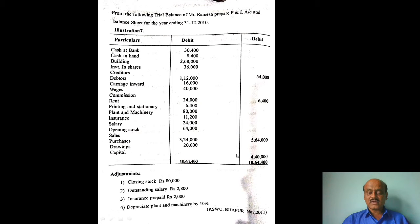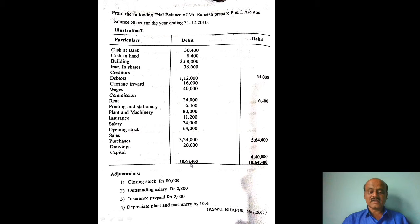Capital: Rs. 4,40,000. Drawings: Rs. 20,000. Purchases: Rs. 3,24,000. Sales: Rs. 5,64,000. So this is the trial balance. Total of trial balance: Rs. 10,64,400 on both sides.